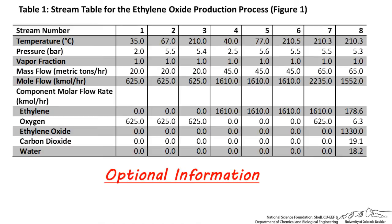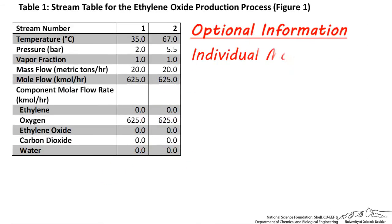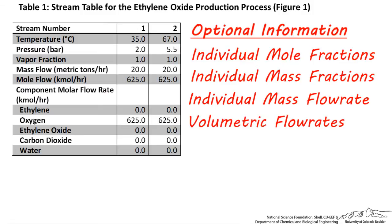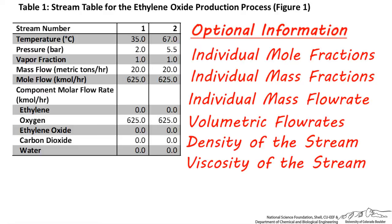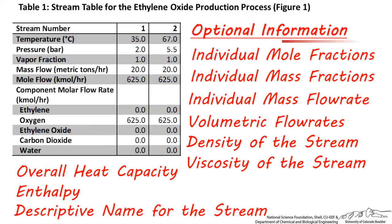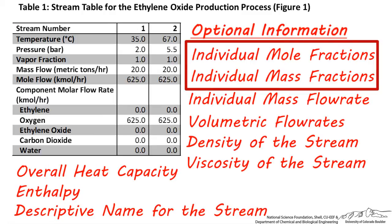Optional information you might want to consider including are individual component mole fractions, individual component mass fractions, individual component mass flow rates, volumetric flow rates, density of the stream, viscosity of the stream, overall heat capacity of the stream, enthalpy, and a descriptive name for the stream. Of all of these, I believe mass or mole fractions are the most common addition to the table since it provides the quickest and easiest way to see the concentration of each stream.